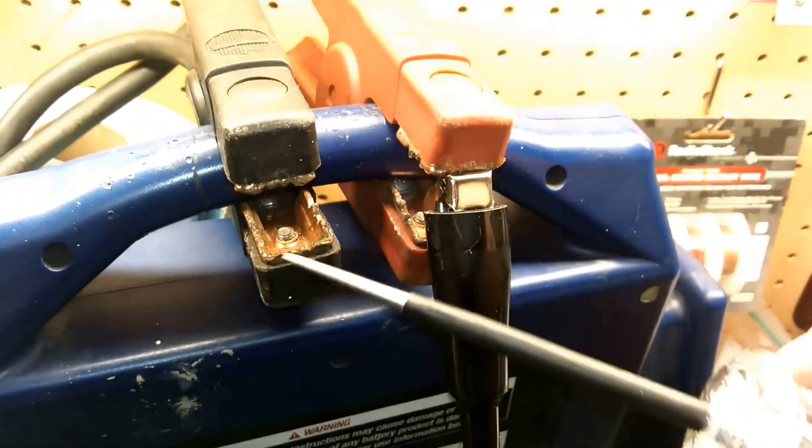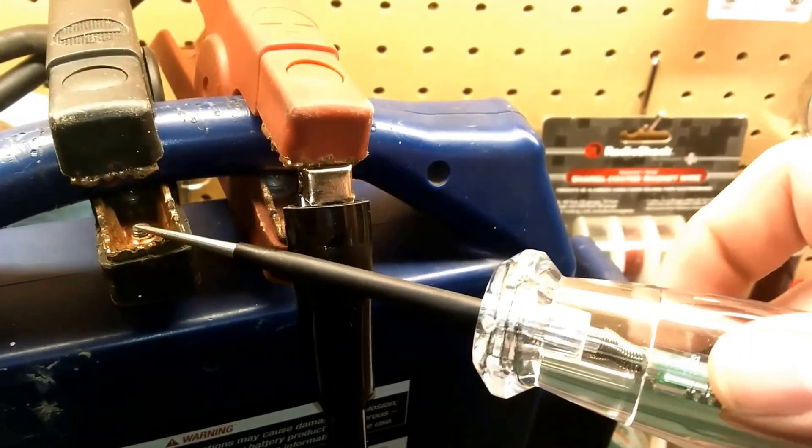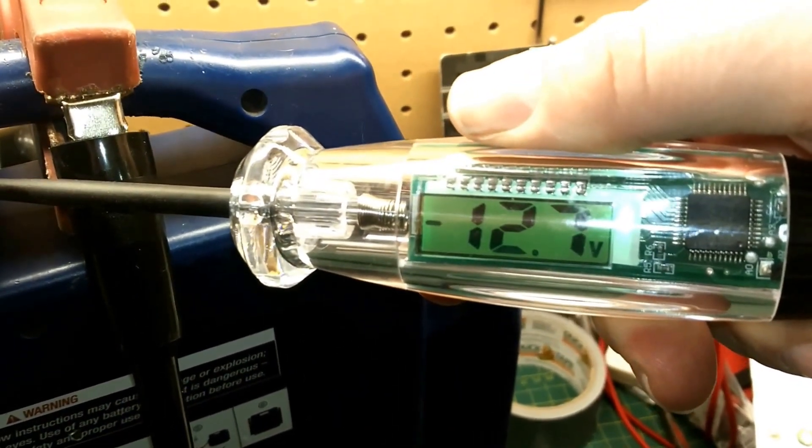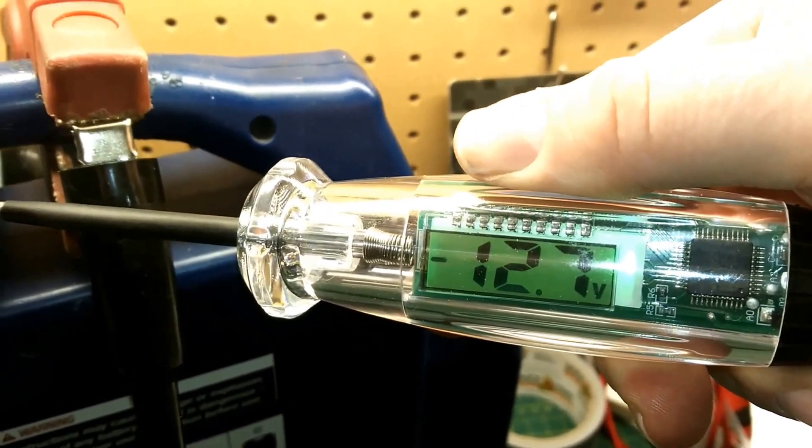before - and then you go over here and hit a ground with this instead of a positive connection, it lights up green. Green for ground. And it also tells you it's a negative voltage of 12.7 volts. So